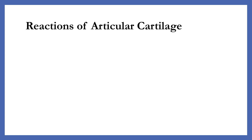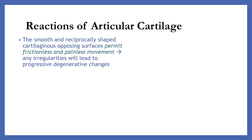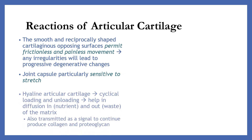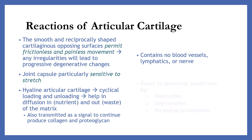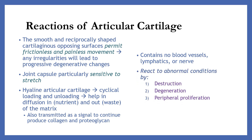Reactions of articular cartilage. The smooth and reciprocally shaped cartilaginous opposing surfaces permit frictionless and painless movement, and any irregularities will lead to progressive degenerative changes. The joint capsule is particularly sensitive to stretch. Hyaline articular cartilage is used for cyclical loading and unloading, helping diffusion of nutrients in and waste out of the matrix. It also transmits signals to continue producing collagen and proteoglycan. It contains no blood vessels, lymphatics, or nerves, yet reacts to abnormal conditions.